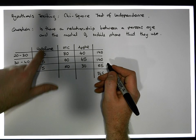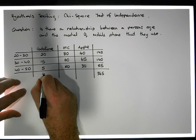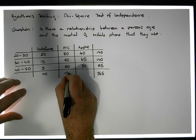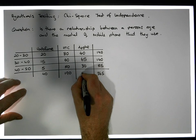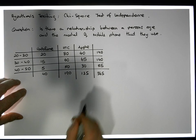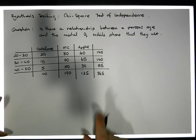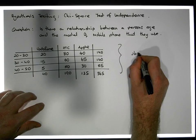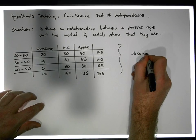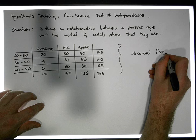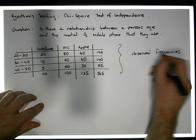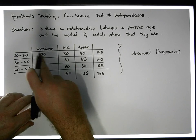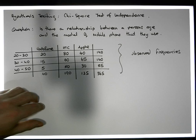For the column totals: 40 people used Vodafone, 190 used HTC, and 135 used Apple. These are the observed frequencies, indicating how many people were within each particular category.